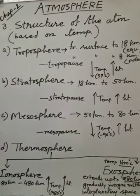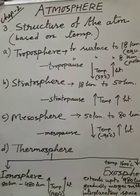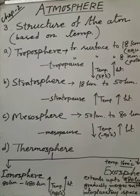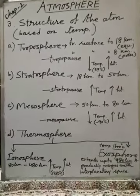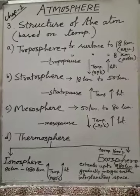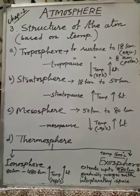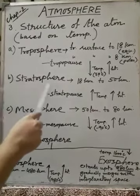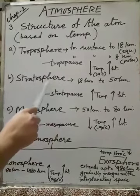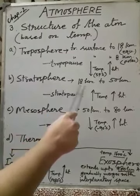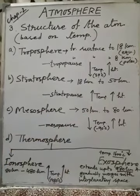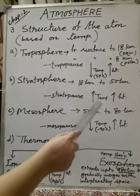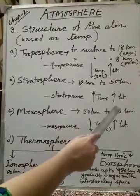Our next layer is stratosphere - a very important layer. In this layer, the concentration of ozone is high. It can protect us from ultraviolet rays from the sun. This layer extends from 18 kilometers to 50 kilometers. The concentration of ozone absorbs UV rays, that is why here temperature increases with increasing height.